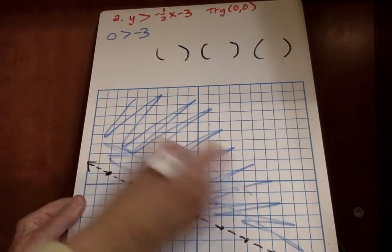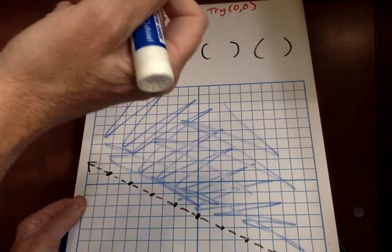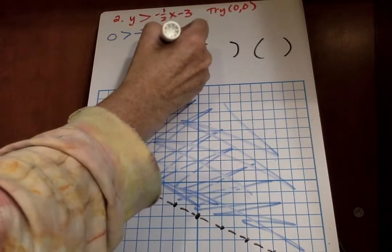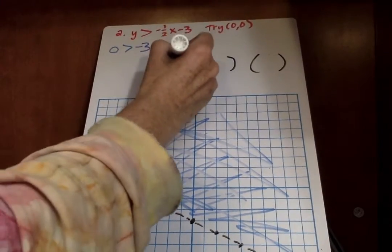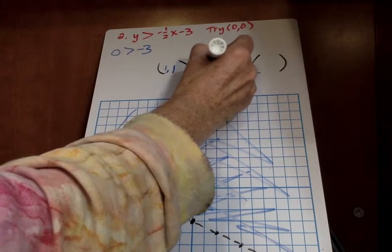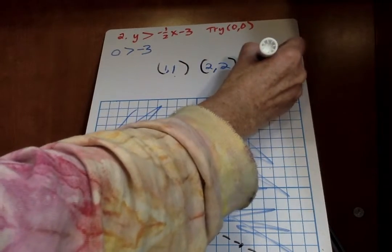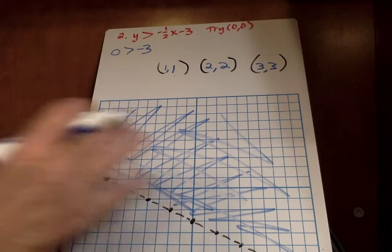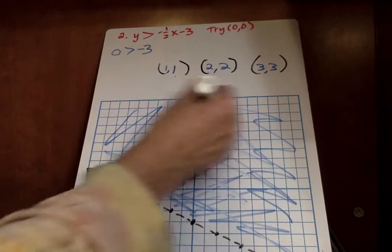Now I can pick anywhere here that I have shaded to be my solutions. I could go with like 1, 1. I could go with 2, 2. And I can go with 3, 3. So there's a whole bunch of different solutions here that you could have chosen.